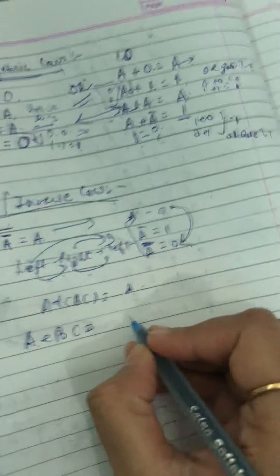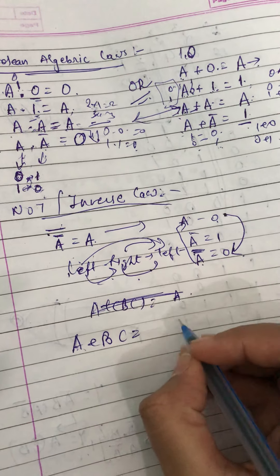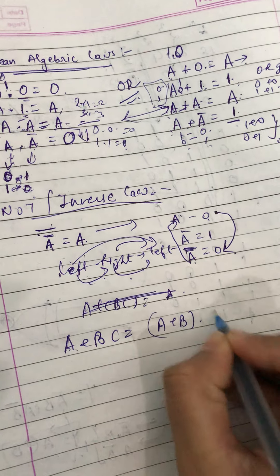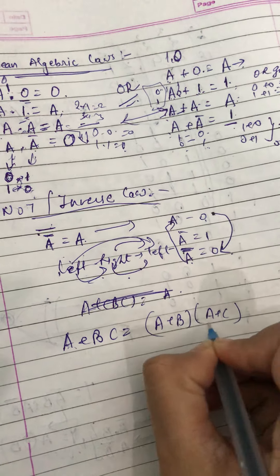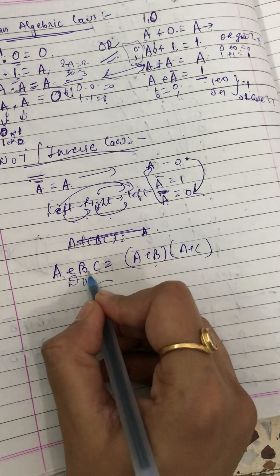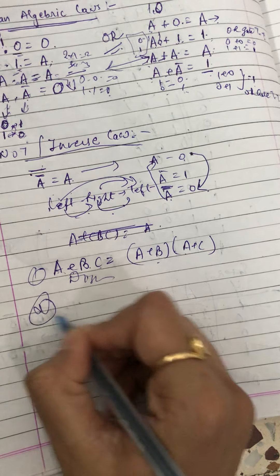Let's go with the distributive law. It is A plus BC, then A plus B into A plus C. This is the distributive law. Just addition and multiplication sign has been changed.